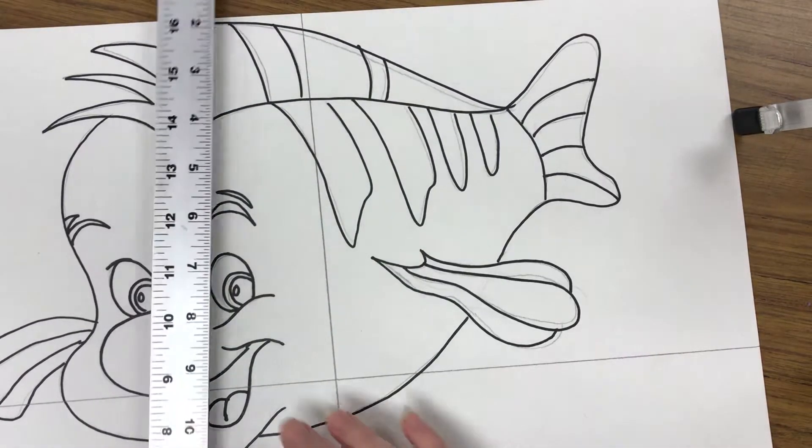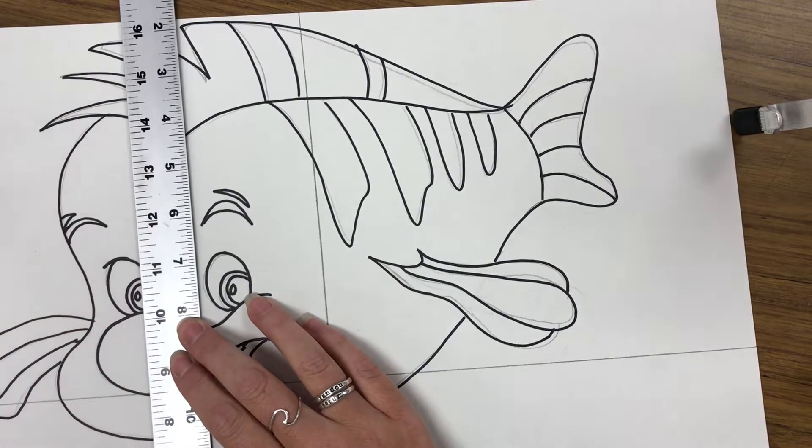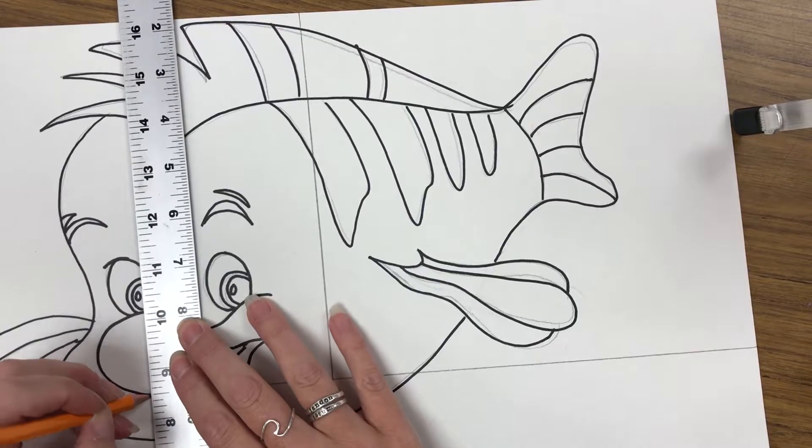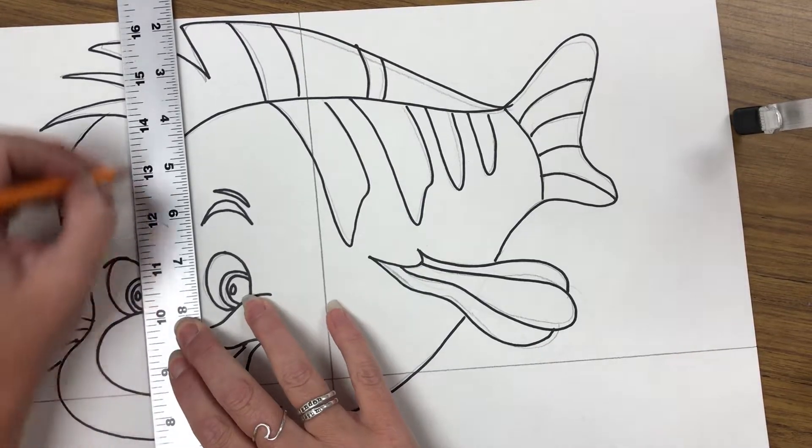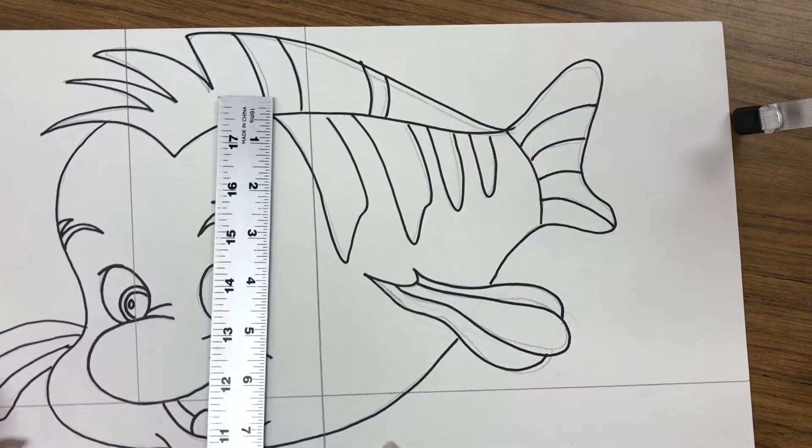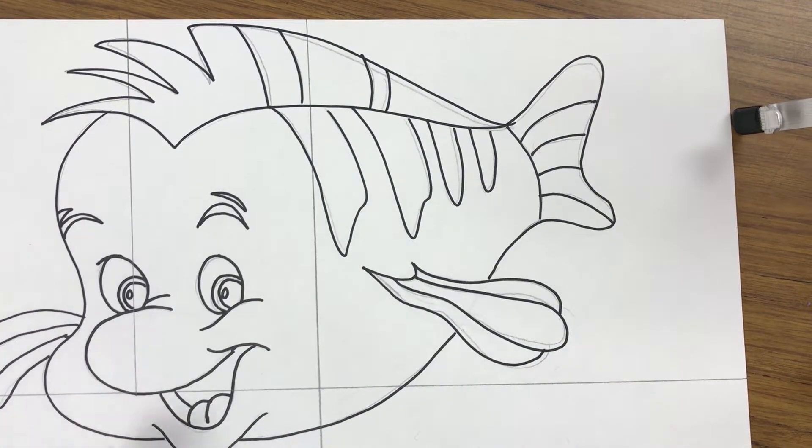The rest of your lines are going to start on an edge or a line and stop on an edge or a line. For my next line, I'm going to start down here on this line and I'm going to go up. I am basically dividing my paper, my entire paper, into different sized squares and rectangles.